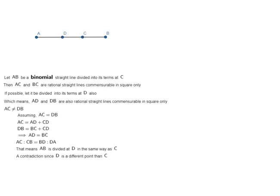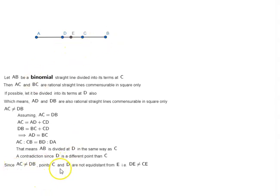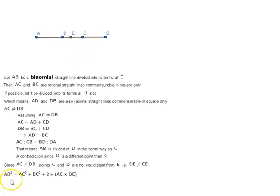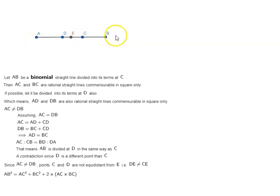Now let E be the midpoint of AB. Since AC is not equal to DB, points C and D are not equidistant from E, that is DE is not equal to CE.